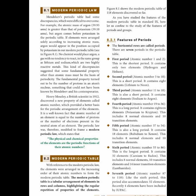The seventh and last period is an incomplete period. It is incomplete because 32 elements are there and recently four elements have been included by IUPAC, so the period is not correctly filled. In summary: the first period is the shortest period; the second and third are short periods; the fourth and fifth are long periods; the sixth is the longest period; and the seventh is an incomplete period.